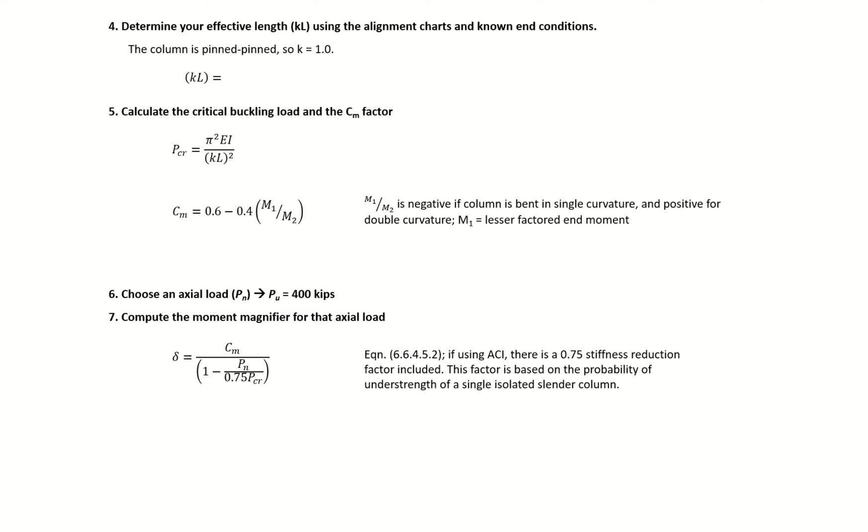We can next determine our effective length KL. We'll use an alignment chart and our known end conditions if we have different end conditions than pin-pin, which is our base case. For us, we have a pin-pin end condition, so we know k equals 1. Our KL is just 1 times 20 feet times 12 inches per foot, which gives us 240 inches.